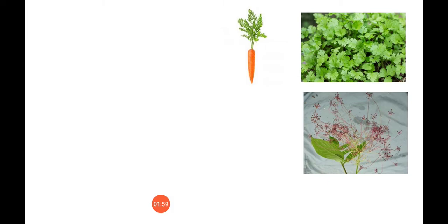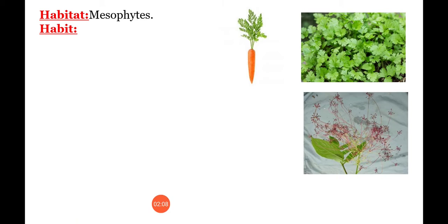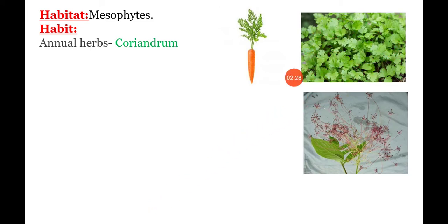Coming to Habitat and Habit. First, Habitat: most of the plants are Mesophytes. Next, Habit: this family has annual herbs, biennial herbs, shrubs and trees. For annual herbs — Coriandrum is an annual herb.